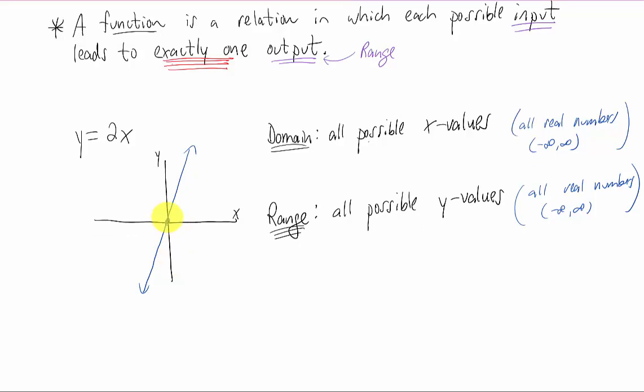What's most important to point out about this is that this is a function, because for every one x value that you plug into the function, you get out exactly one y value. Remember that exactly one output is very important. Let's look at another example.